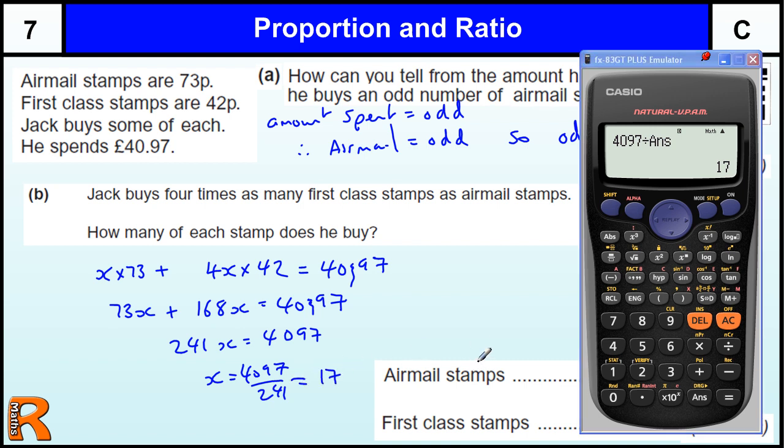So there are 17 airmail, and four times as many, 68 first class.